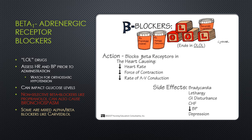You should assess heart rate and blood pressure prior to administration and watch for orthostatic hypotension. Beta blockers can impact glucose levels, causing both hypo- and hyperglycemia in patients who have impaired glucose metabolism.